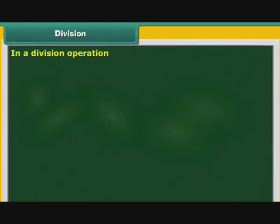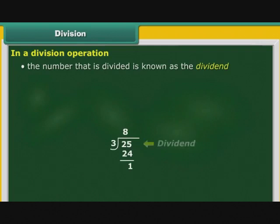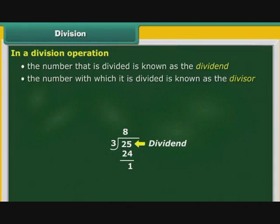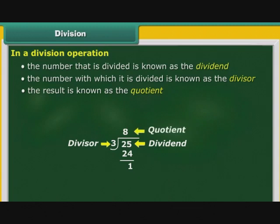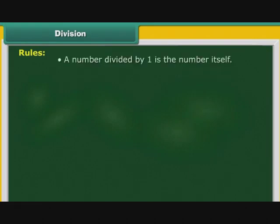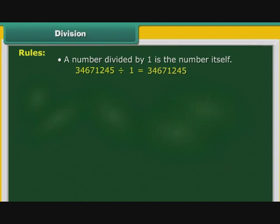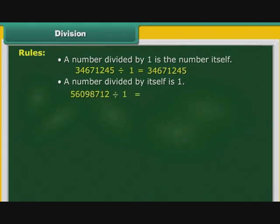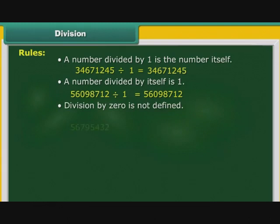In a division operation, the number that is divided is known as the dividend. The number with which it is divided is known as the divisor. The result is known as the quotient, and the number left over when the divisor does not divide the dividend exactly is known as the remainder. Rules of division: A number divided by 1 is the number itself — 34671245 divided by 1 is equal to 34671245. A number divided by itself is 1. Division by 0 is not defined — 56795432 divided by 0 is undefined.